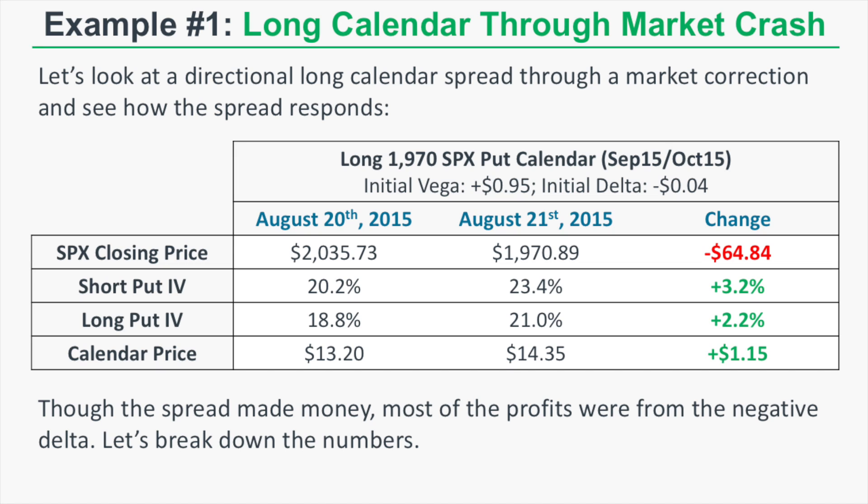On August 20th, 2015, SPX closed at 2035.73. The short put's implied volatility was 20.2% and the long put's was 18.8%, with the calendar spread trading for $13.20. On August 21st, 2015, the market dropped $64.84, closing at 1970.89. The short put's implied volatility increased to 23.4% — a 3.2% increase — while the long put's implied volatility increased to 21% — a 2.2% increase. The calendar spread's price increased to $14.35 for a $1.15 gain.